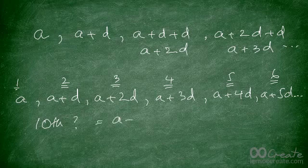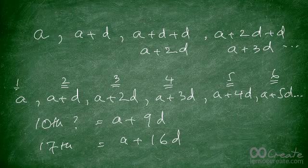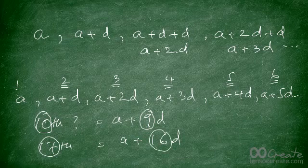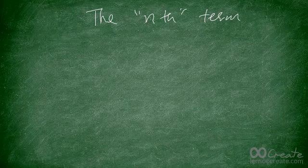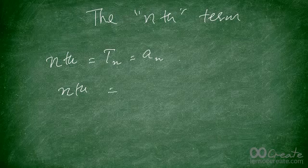The tenth term will be a + 9d. The 17th term will be a + 16d. The coefficient of d is always one less than the position you're looking at. That gives us the important formula: the nth term, written as Tₙ or aₙ, equals a + (n − 1)d.